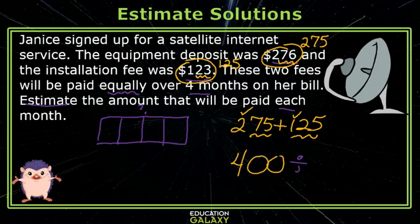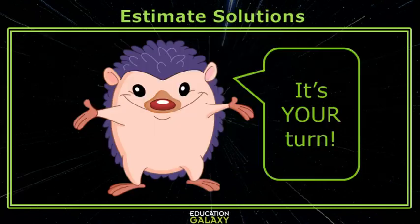So I have $400 that I have to divide equally over four months, so that would be $100 each month. Okay guys, it's your turn.